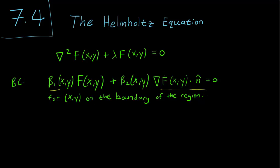Except of course that the beta 1s and the beta 2s don't have to be constant. They can take on values x and y as long as x, y are on the boundary of the region. It is also possible to consider more general multi-dimensional Sturm-Liouville equations, but those are really difficult, so we're just going to concentrate on this simple Helmholtz equation for now.